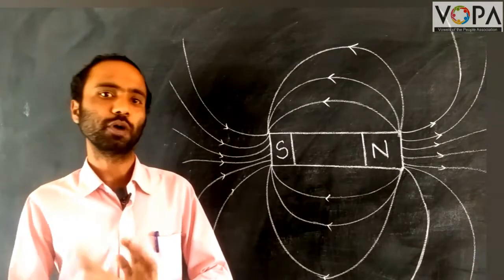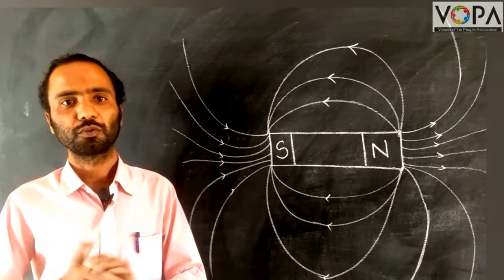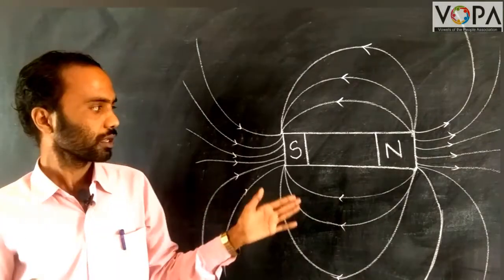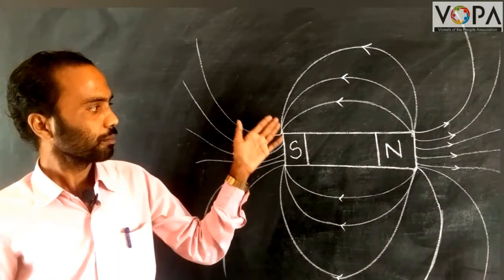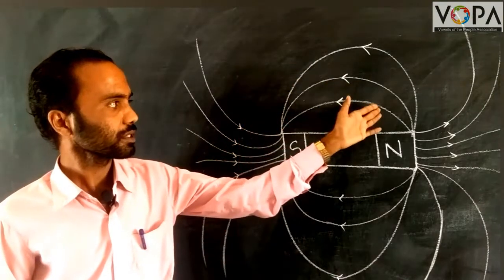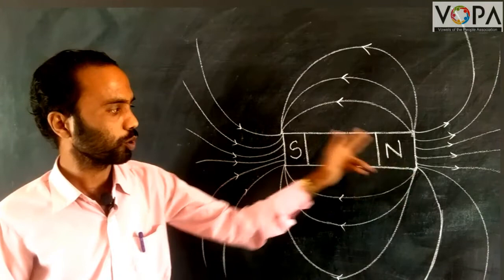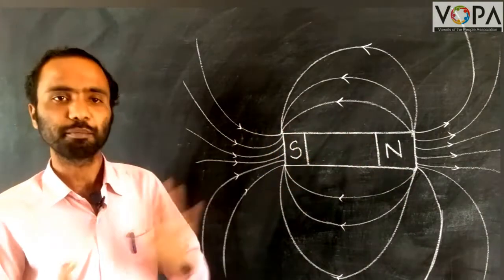As you learned in the above activities, what is the inference from the above experiments? A British scientist, Michael Faraday, gave these names to these lines of force which run from north pole to south pole of a magnet.